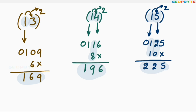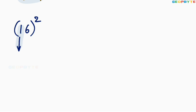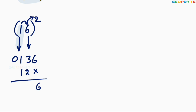I hope you are clearly following. Let us take the 16 square. Write 1 square first: 01. 6 square is equal to 36. Then multiply 1 with 6: 1 into 6 is 6. Multiply that 6 with 2: 6 into 2 is 12. Leave the first space, write that 12 here. Add these two values: 6, 3 plus 2 is 5, 1 plus 1 is 2. So 16 square is equal to 256.